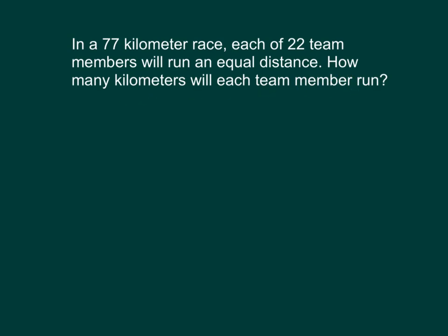Let's write a division expression to solve for the number of kilometers run by each team member. That would be 77 divided by 22. Using the standard algorithm, we would have 77, we're dividing by 22.